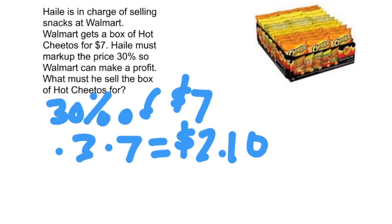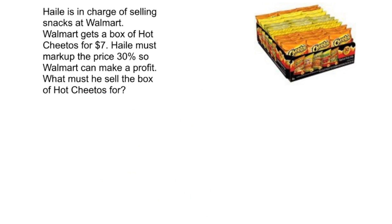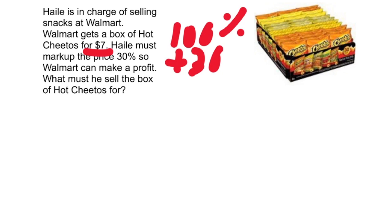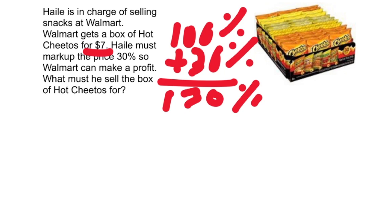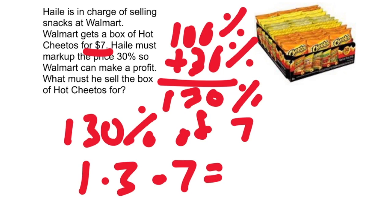He puts the $7 and the $2.10 together to get a selling price of $9.10 — they need to mark it up, otherwise they don't make a profit. A second way, in one step, is to think that we want all 100% of the $7 plus 30% markup, which is 130% total. So we find 130% of $7: one and three-tenths times $7 gives the same answer of $9.10.